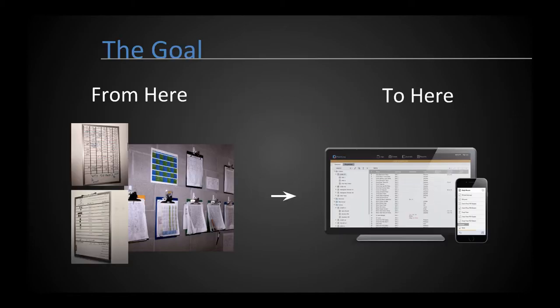The goal is to migrate your existing paper-based records into the software. Most customers start off by using PlantLog for operator rounds — the routine inspection of equipment within the facility to ensure they are operating within normal parameters. The software is designed to be very flexible and can also be used for preventative maintenance, tracking check-in and check-out of items such as keys or pagers, and even as an inventory tracking system.